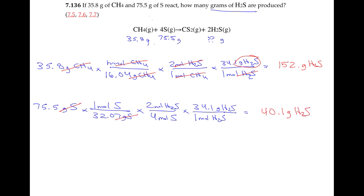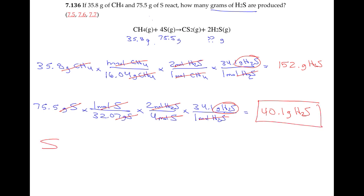The grams of sulfur cancel, moles of sulfur cancel, moles of H₂S cancel, and I'm left with grams of hydrogen sulfide. If I had 75.5 grams of sulfur and all the methane I ever wanted, I would only get 40.1 grams. So when reacting 35.8 grams of methane with 75.5 grams of sulfur, the maximum amount of H₂S produced is 40.1 grams. Sulfur is the limiting reactant — if we had more sulfur, we could make more hydrogen sulfide. The answer is 40.1 grams of H₂S.